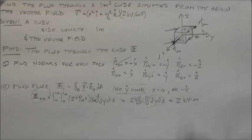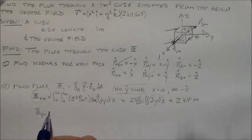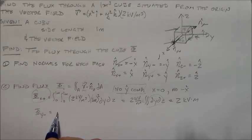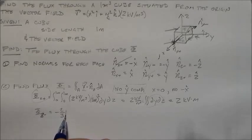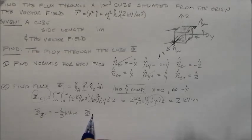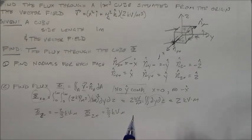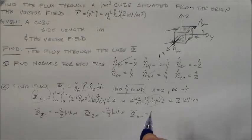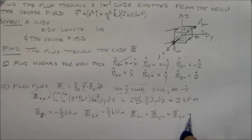And you can go ahead and you can do the integrals for the other ones. They're not really complicated and you'll find out that phi z minus is equal to something like minus two thirds kilovolt meters, phi z plus is equal to two thirds kilovolt meters. And all these other guys, x minus, y minus, and y plus, they're all equal to zero.